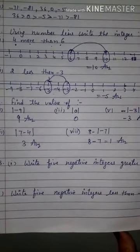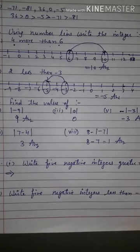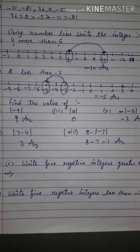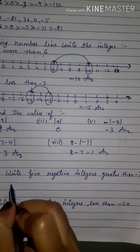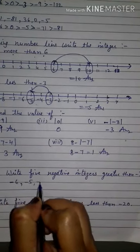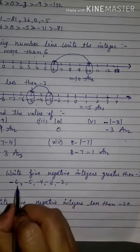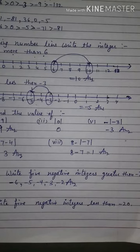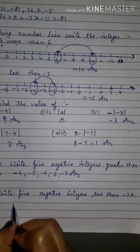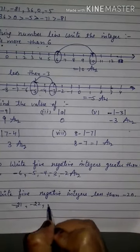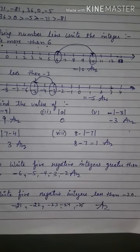Next, 13th question, first part: write 5 negative integers greater than minus 7. We can write any 5 integers which are greater than minus 7. Here, since it says negative, we will write negative integers greater than minus 7. Second part: write 5 negative integers less than minus 20. Minus 20 — there are lots of such numbers. Choose any 5 negative integers less than minus 20.